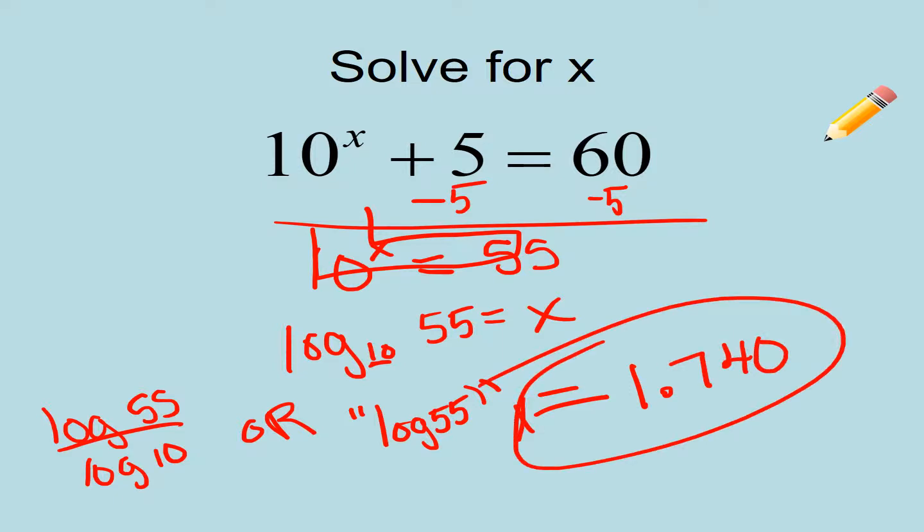Or, because your calculator is already in base 10, you can just punch in log 55. And that's going to spit back an answer of about 1.740. So that's what x is equal to, 1.740.